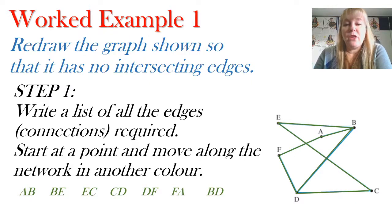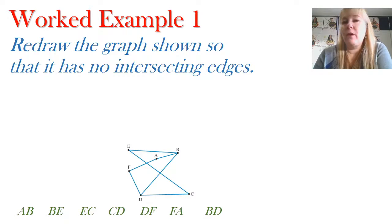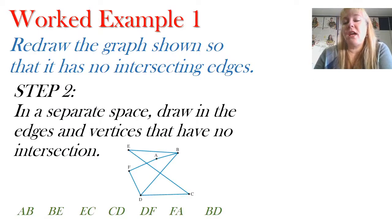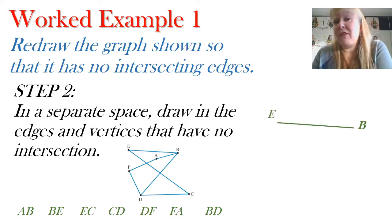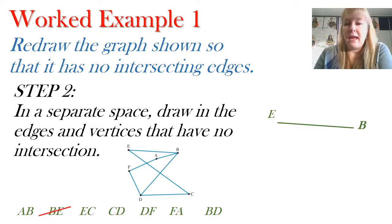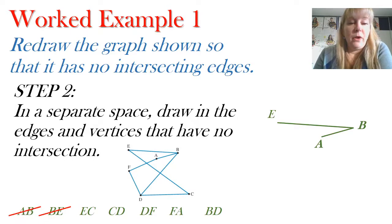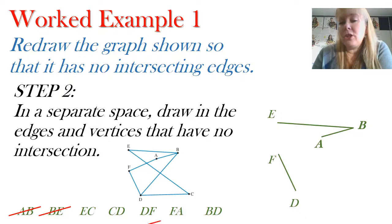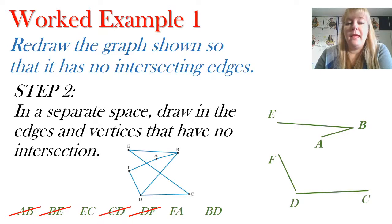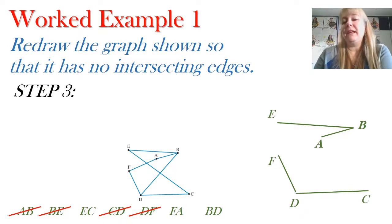Now comes the fun part — we get to redraw the network. In a new space, my next step is to start by drawing in edges and vertices that have no intersection to begin with. I could start with EB — that's one of the safe edges, it didn't cross anywhere — and add and cross it off my list as I go. Then A to B, that one didn't have an intersection either. I'll add FD, then DC, crossing them off the list.